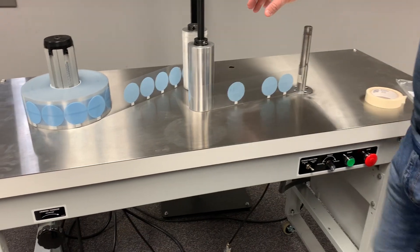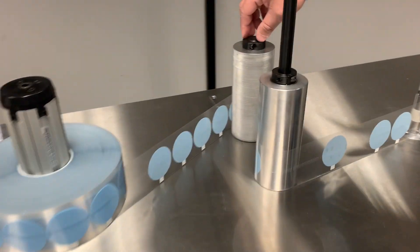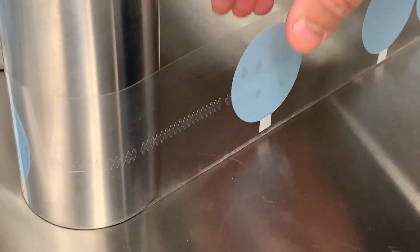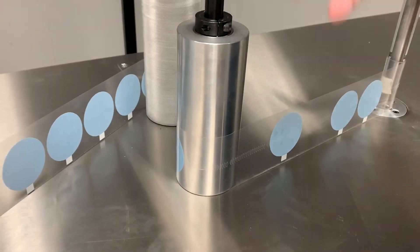Okay guys, I've got this system set up. We've got our knurled idler roll on here, which is what we're going to have to use because of the adhesive on the outside of these labels.